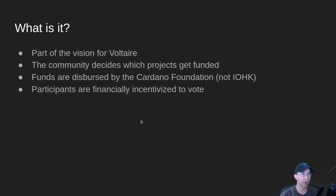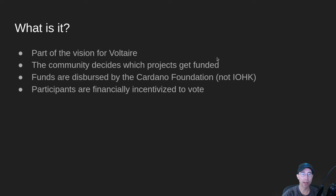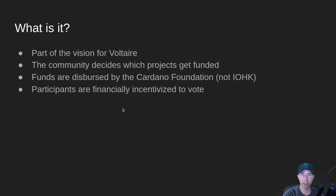So what is Catalyst? It is part of the vision for Voltaire. This allows the treasury to fund various projects that will help the whole Cardano ecosystem grow. Cardano and all cryptocurrencies are really valued by the network effects they have. So this is one of the big advantages of Cardano — it has this treasury and it can help its own network effect by funding really cool projects. The community gets to decide which projects get funded, and the funds are dispersed by the Cardano Foundation. This is not an IOHK thing, although they did help build some of the technology for it, as did EMURGO for building integration with UROI. Also, participants are financially incentivized to vote — when you vote in Catalyst, you do get a little bit of ADA based on what your voting power is.